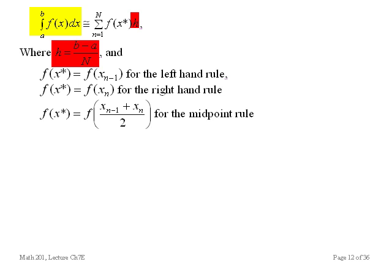The height of the rectangle is the value of the function somewhere in each mesh. For the left-hand end point, it's a value at the left-hand side of the mesh. For the right-hand rule, it's a value at the right-hand side. For the midpoint rule, it's obviously a value in the middle of the mesh.